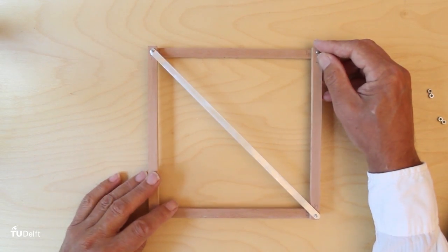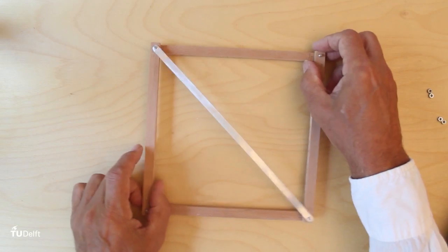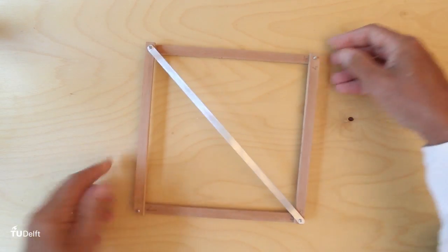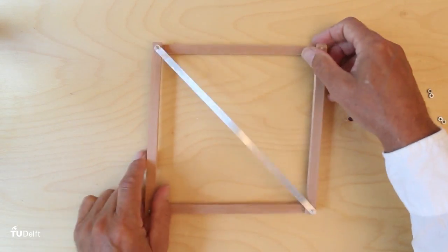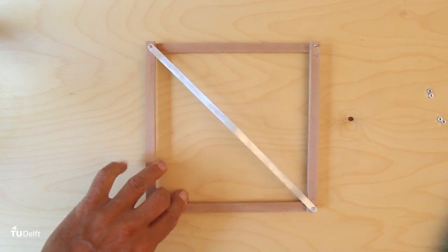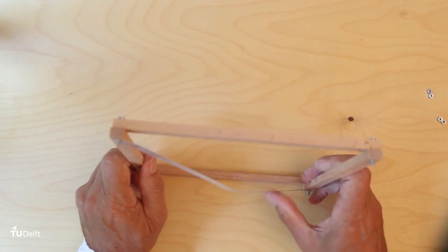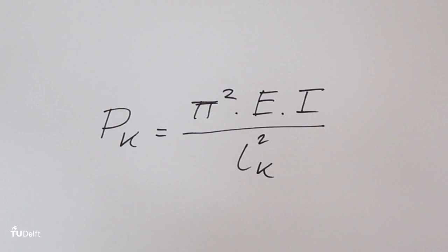But when we subject the frame to a force in the other direction, it gives way. The slender bracing element buckles. Buckling is the effect that an element suddenly gives way; it bends in the weakest direction when compressed over a certain amount of stress.